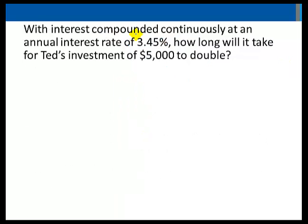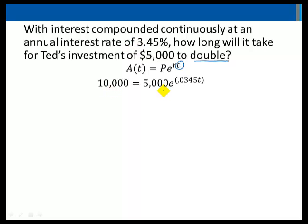Another example: with interest compounded continuously at an annual interest rate of 3.45%, how long will it take for Ted's investment of $5,000 to double? This time we're looking for time. P equals 5,000, and we want that amount to double, so A equals 10,000, and the interest rate is still 0.0345. Plugging in: 10,000 equals 5,000 times E raised to the power 0.0345T. Dividing through by 5,000 gives 2 equals E raised to the 0.0345T.